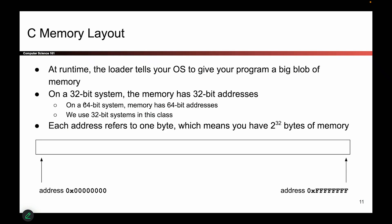In this class, we'll be using 32-bit systems, which is a fancy way of saying this address is 32 bits long. If an address is 32 bits long and I have a unique address for every single byte, that means I have 2 to the 32 bytes of memory.